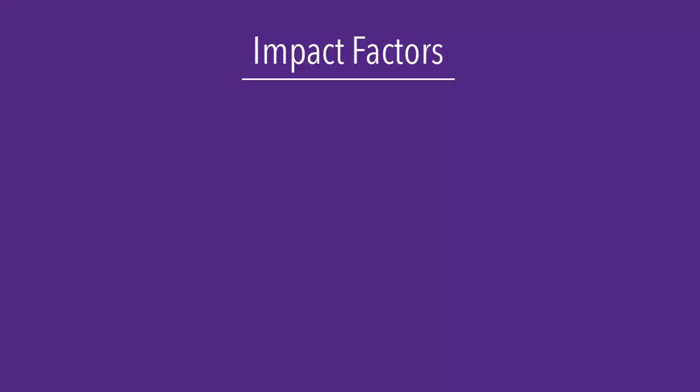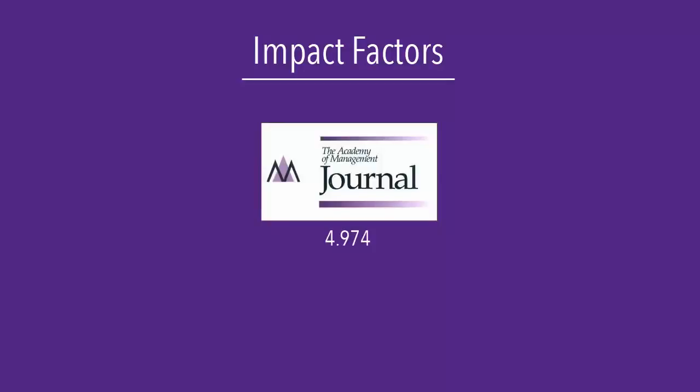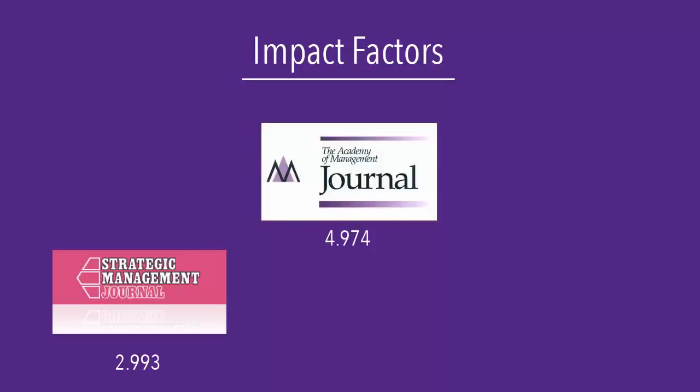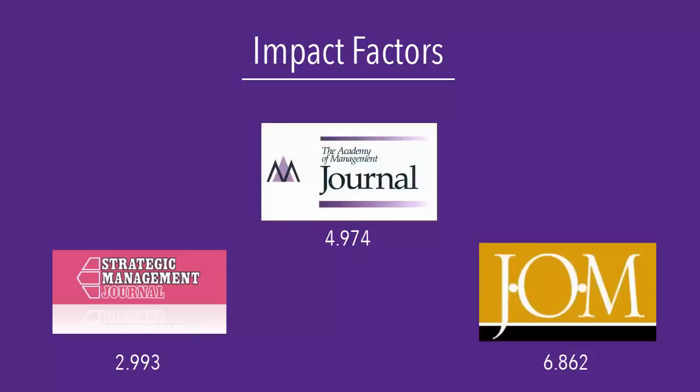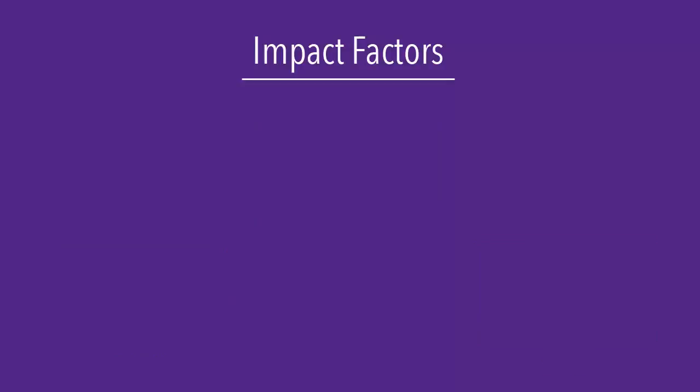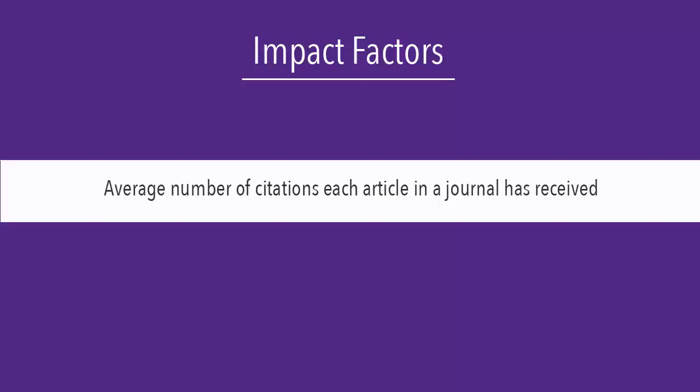A journal's impact factor is intended to convey the importance of a particular journal within a given field of study. The impact factor is based on the average number of citations each article in a journal has received.